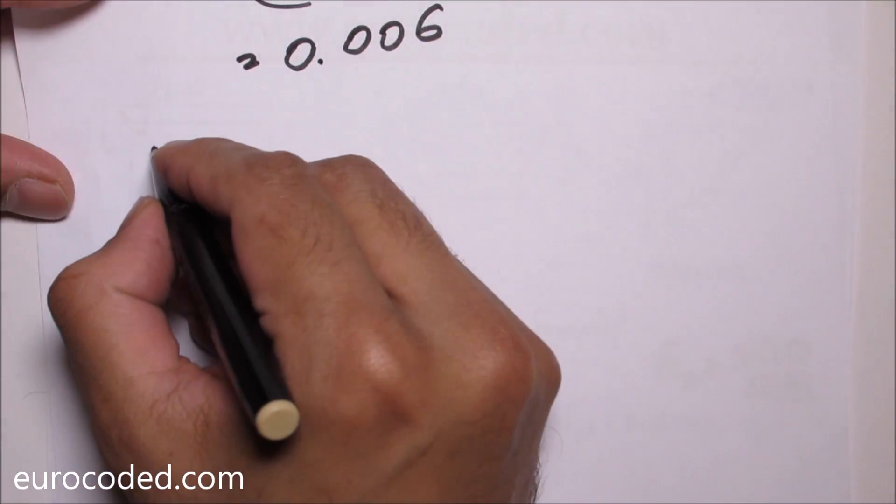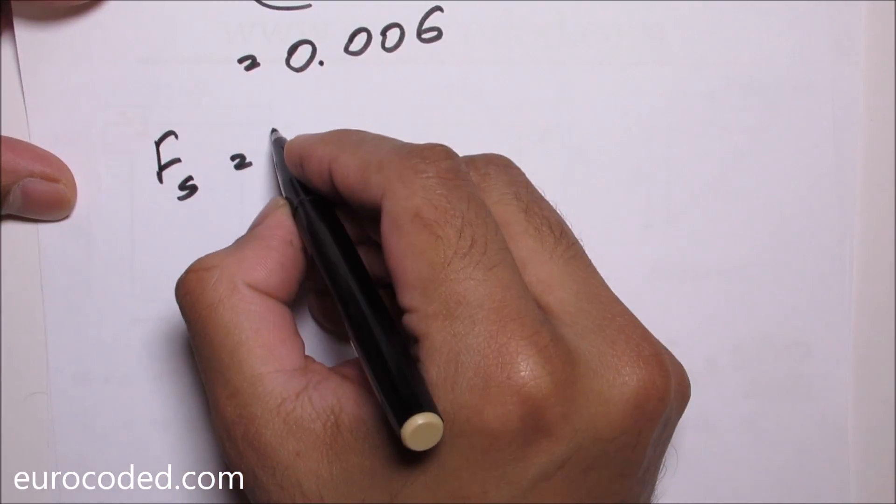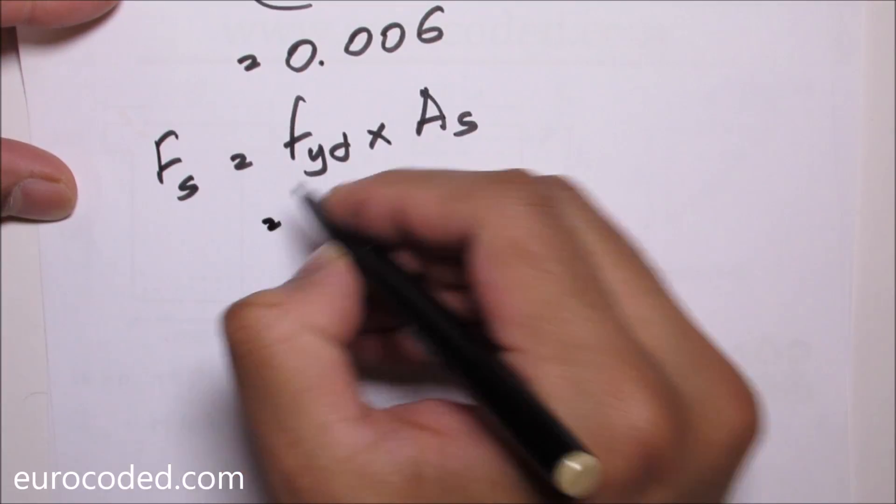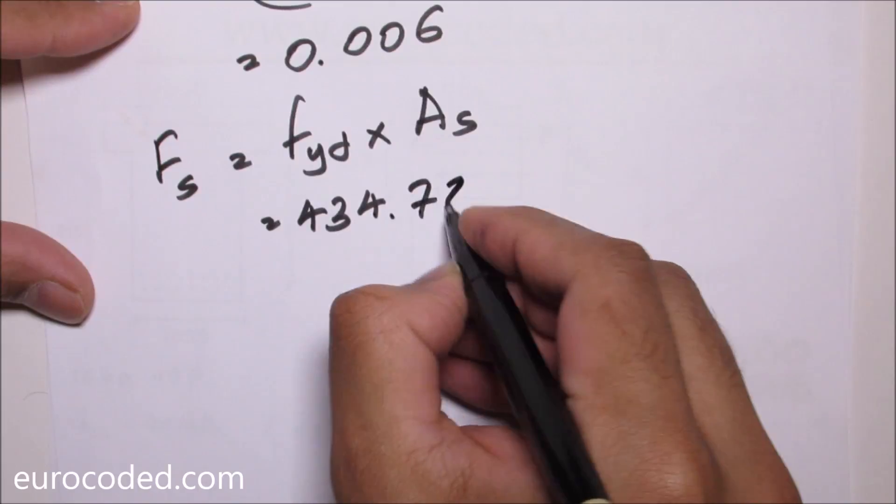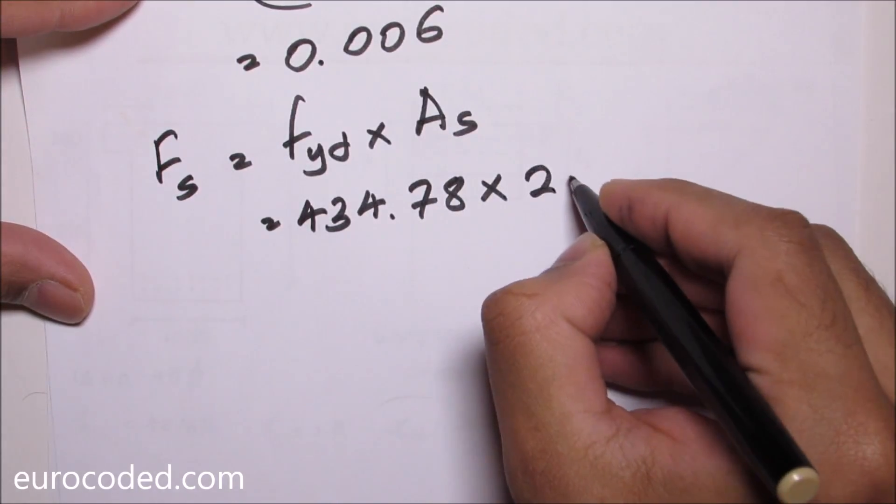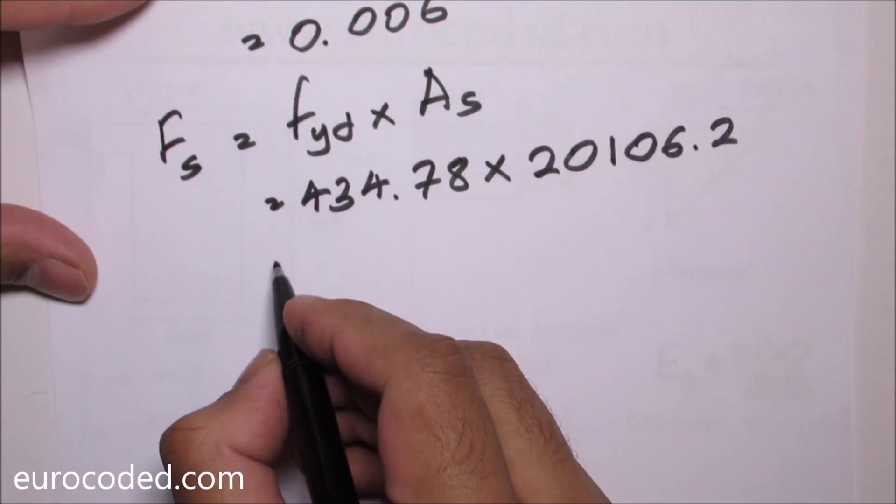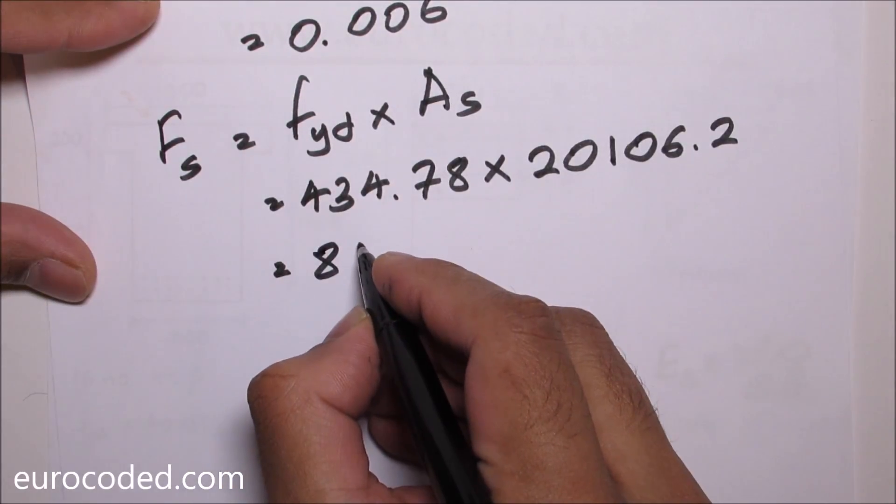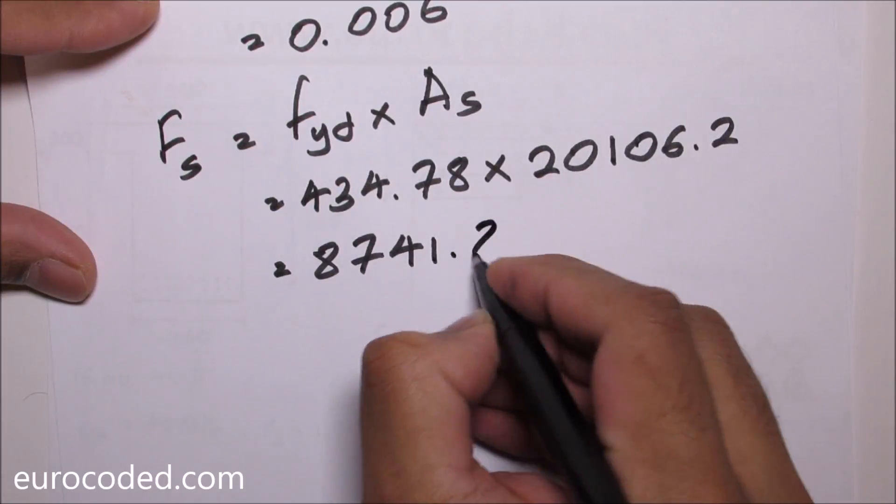Hence we can calculate our tension force in steel. FS is equal to FYD times the area of steel which is 434.78 times the area. And if you convert the units correctly this value is going to be 8741.8 kN.